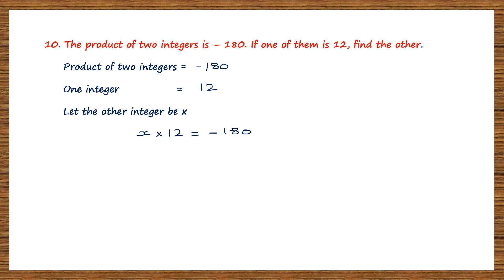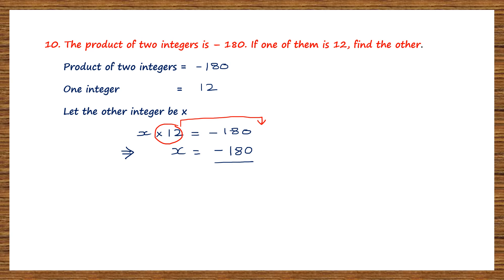This is an equation with a left-hand side and a right-hand side. We are going to solve for x. To find the value of x, we need only x on the left-hand side. We transpose 12, which is multiplication on the left-hand side. Moving it to the right-hand side, multiplication becomes division by 12. So x equals minus 180 divided by 12.